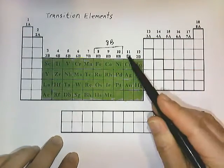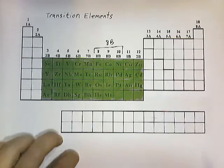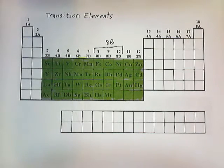Groups 11 and 12 are labeled as 1B and 2B. Again, this is an older form of labeling that doesn't appear on all periodic charts.